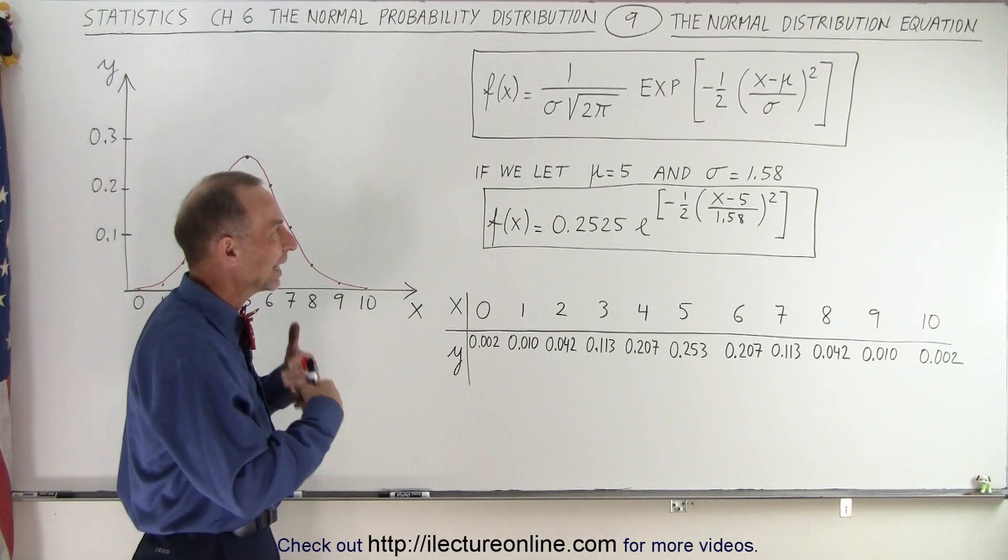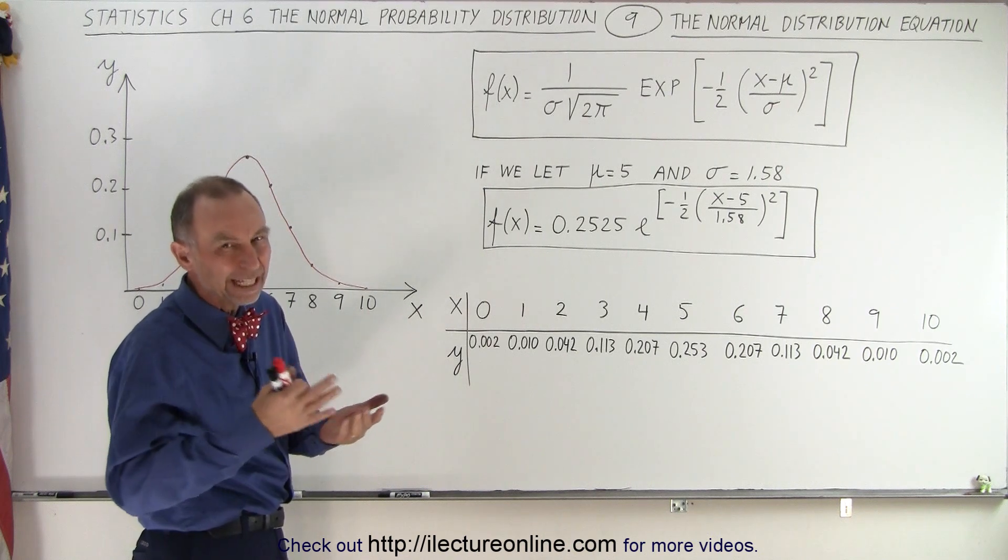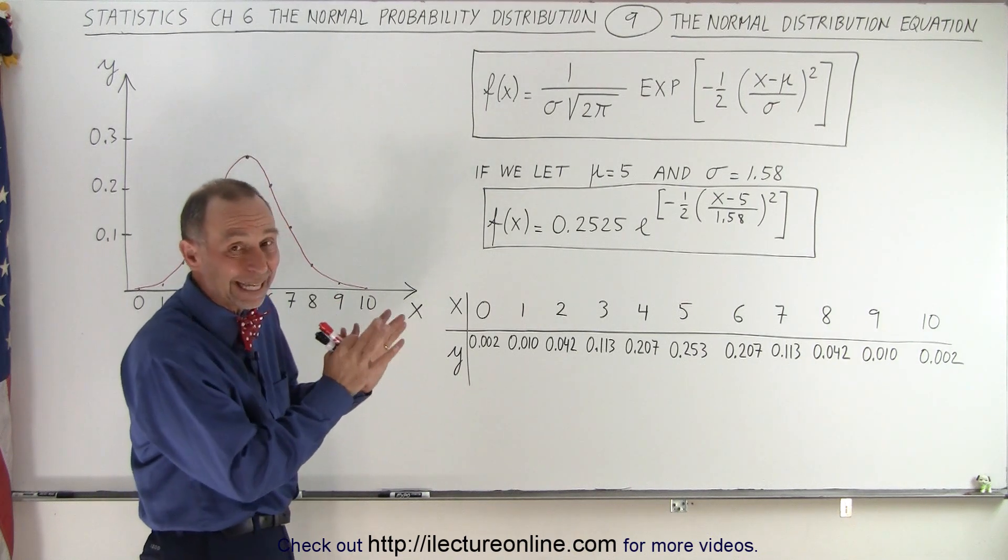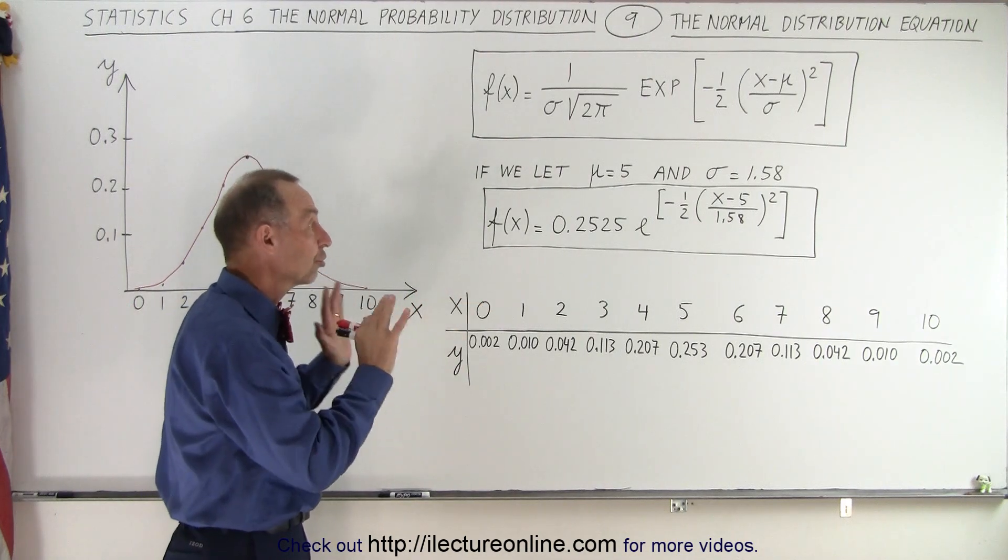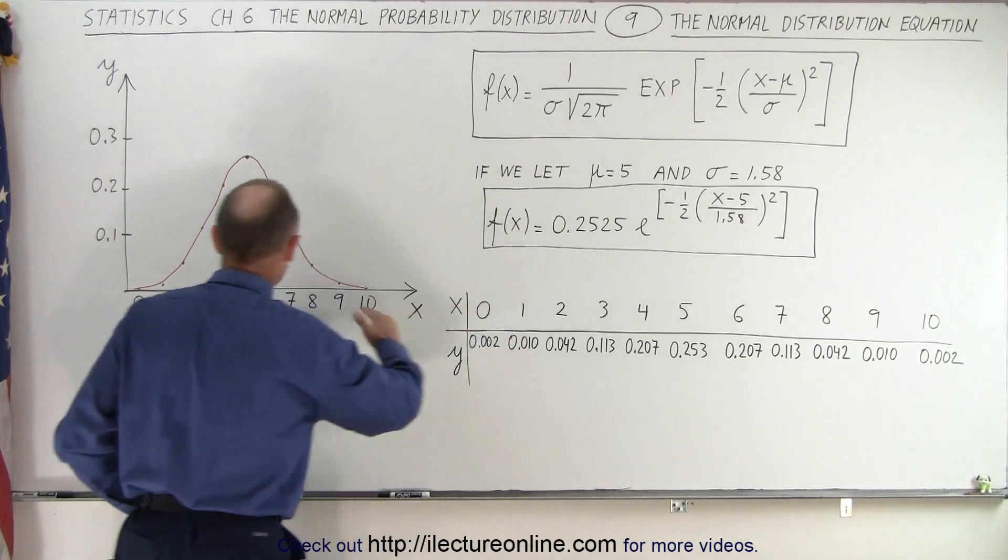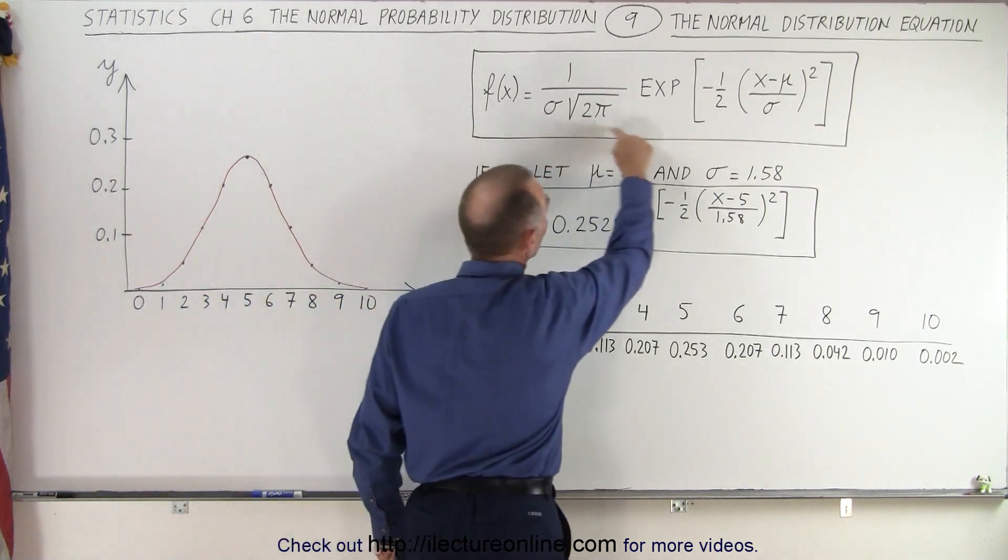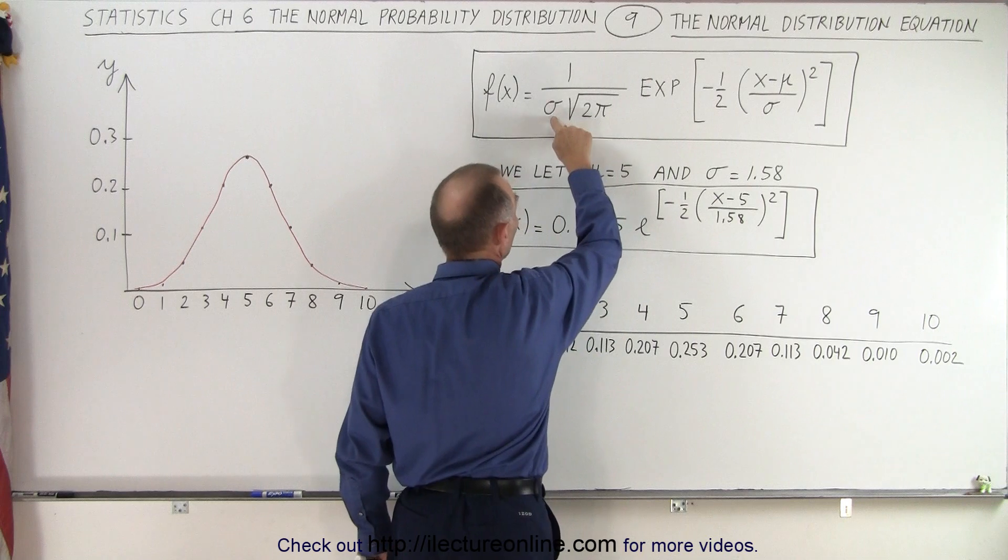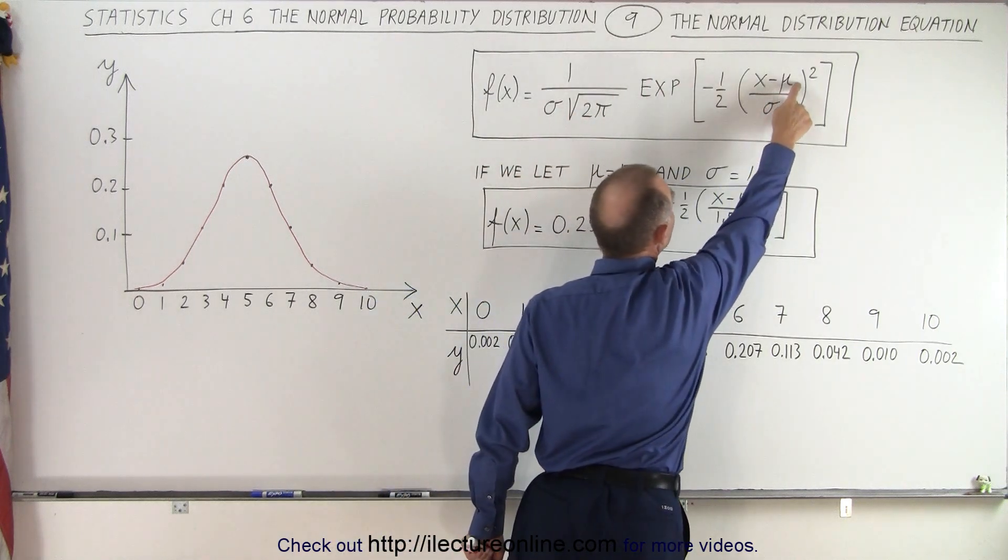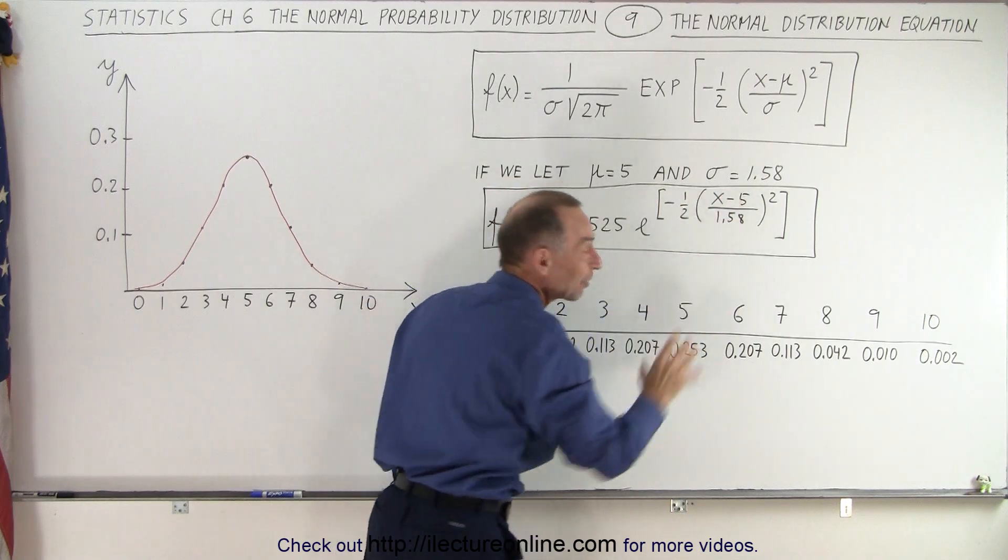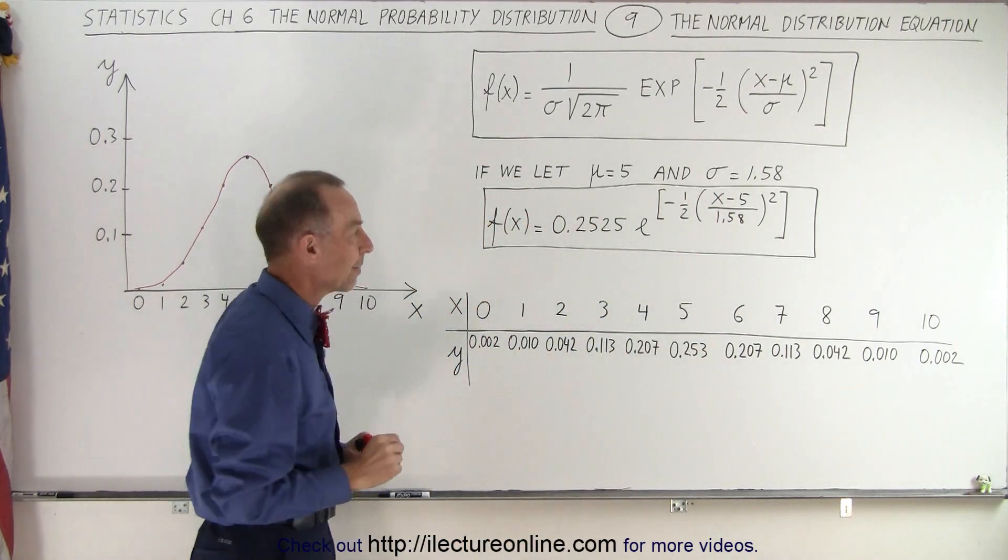So, that's why it's an iterative solution, and we need calculators or computers to do that. Therefore, we're not going to get into that here, but as long as you realize, yes, a curve that represents a normal probability distribution has this general equation, and then plugging in specific values for the mean and for the standard deviation, we can get a specific equation for your specific example.